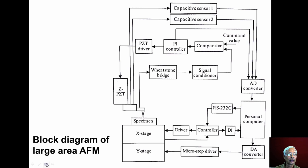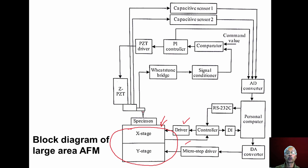The block diagram of the large area AFM shows the x-y stage with appropriate drivers, the stage table surface on which a specimen is mounted, and the cantilever with probe. Measurement results are sent through a feedback system. A PZT driver and capacitive sensors are used for compensation.